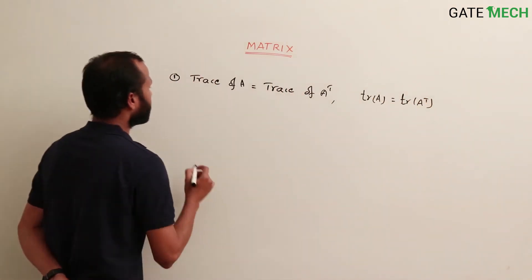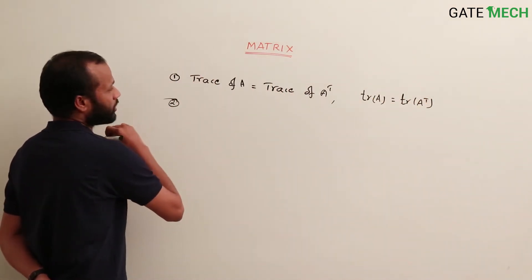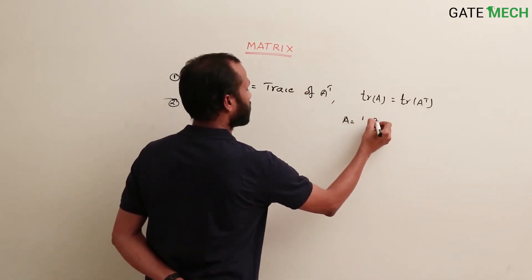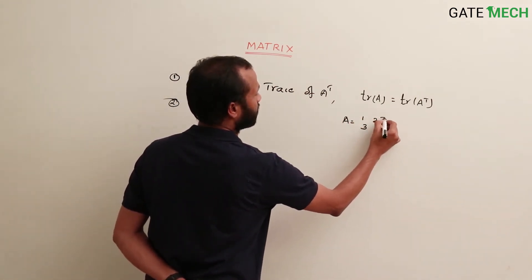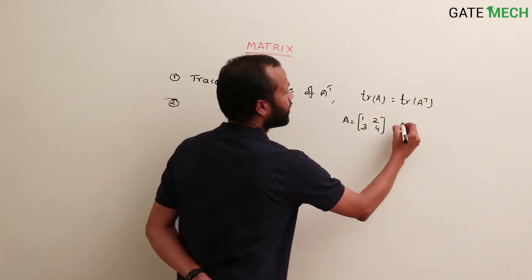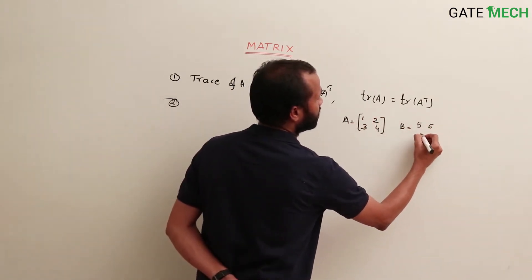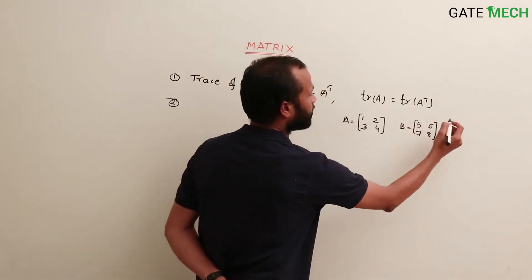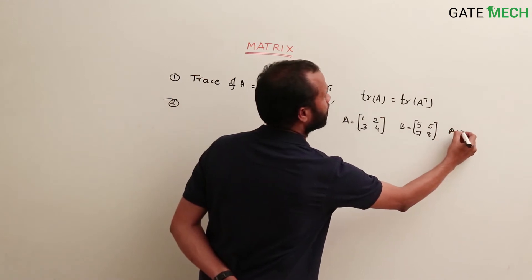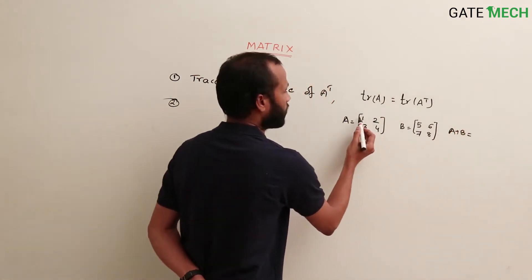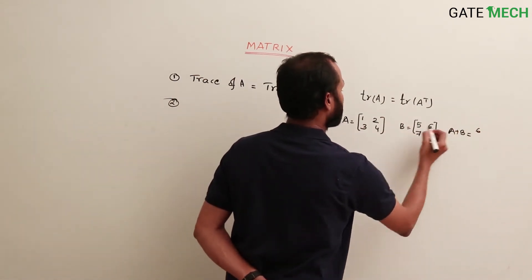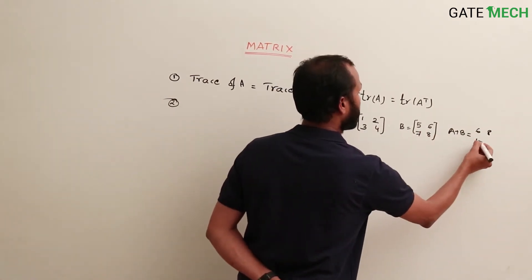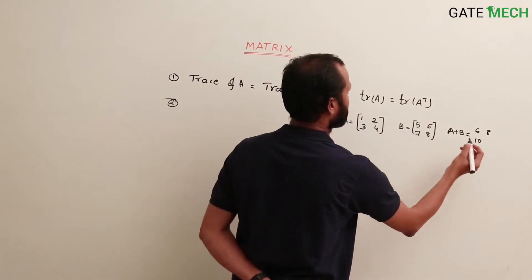One more important property: suppose A equals the matrix [1, 2; 3, 4] and B equals the matrix [5, 6; 7, 8]. Then A plus B equals [6, 8; 10, 12].